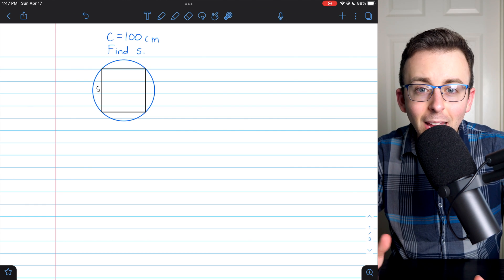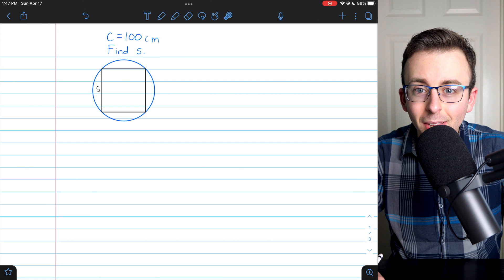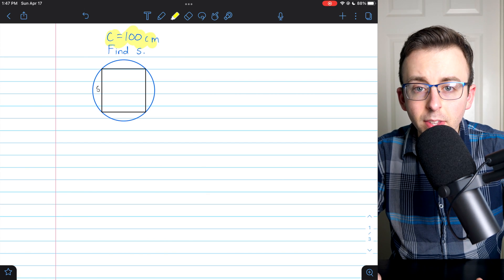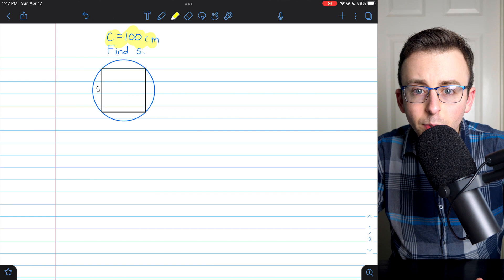We want to find the side length of the square using the fact that the circle's circumference is 100 centimeters. We'll go through this example and I'll also give you the general formula to solve this sort of problem. Since we know the circumference of this circle, what else could we figure out?